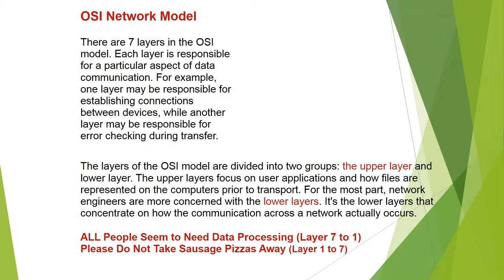OSI Network Model: There are seven layers in the OSI model. Each layer is responsible for a particular aspect of data communication. For example, one layer may be responsible for establishing connections between devices while another may be responsible for error checking during transfer. The layers are divided into two groups: the upper layer and the lower layer. The upper layer focuses on user applications and how files are represented on the computer prior to transport. Network engineers are more concerned with the lower layer.